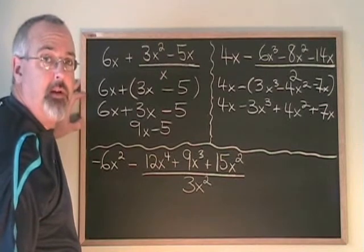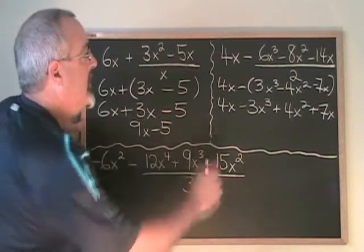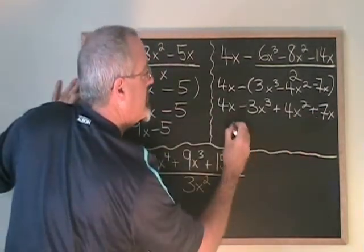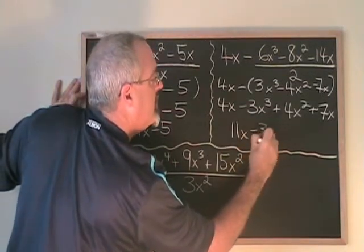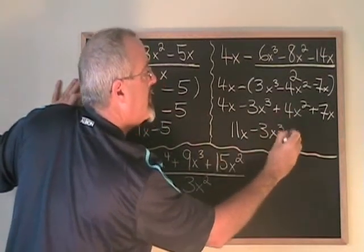Now I just have to combine similar terms and give my final answer. 4x plus 7x is 11x. I have minus 3x cubed plus 4x squared.